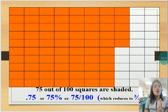Considering that you have here 100 rectangles that are with equal measurements or with equal area, we have 75 out of 100 rectangles are shaded.